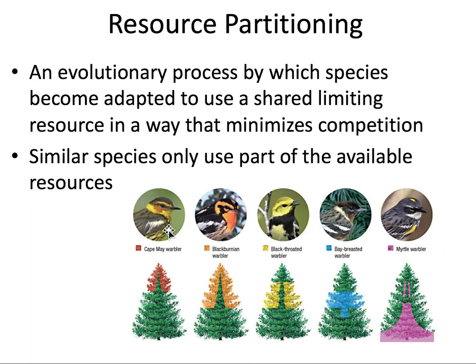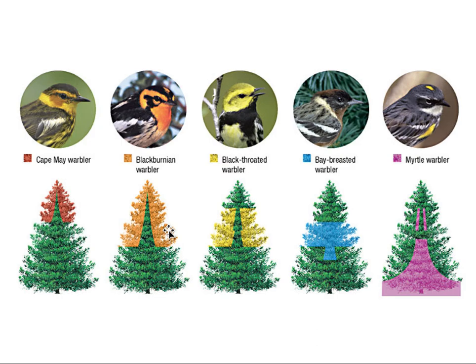Other things that happen when organisms are in competition include something known as resource partitioning. This is an evolutionary process — it's how two competitors can become adapted to using a shared limiting resource, and it minimizes competition between them. Similar species will use part of an available resource. The famous example involves warblers, which are small birds. On their own, these birds would be perfectly happy living on any part of the tree, making their nests there, and feeding on whatever organisms are available.